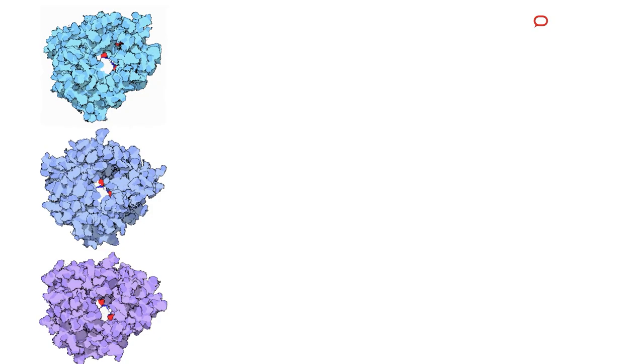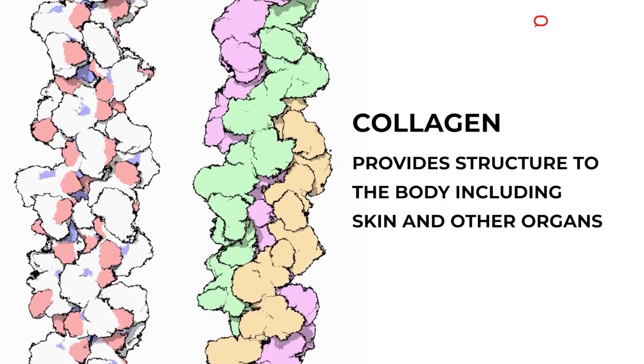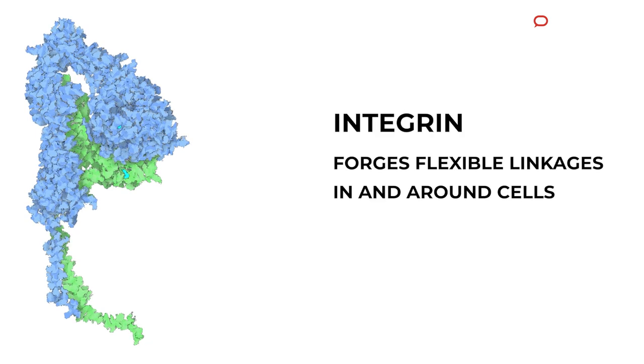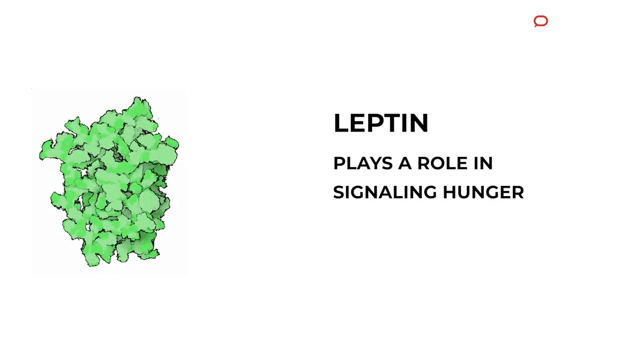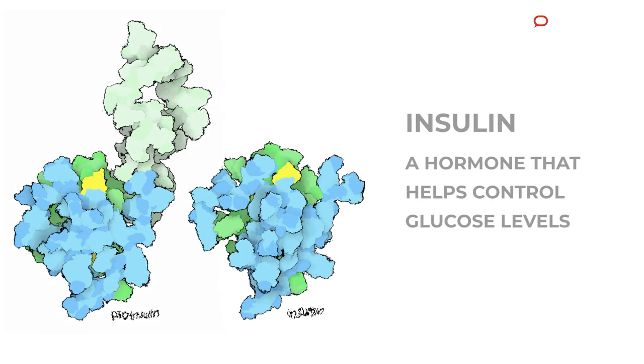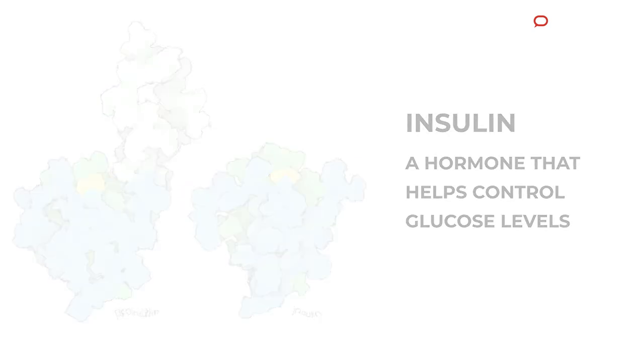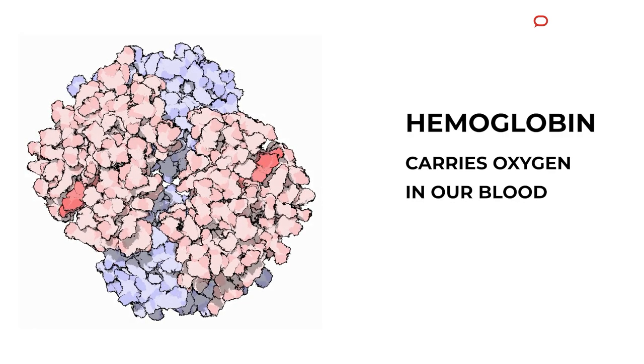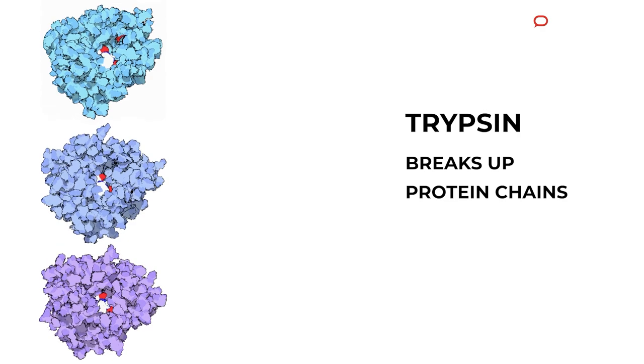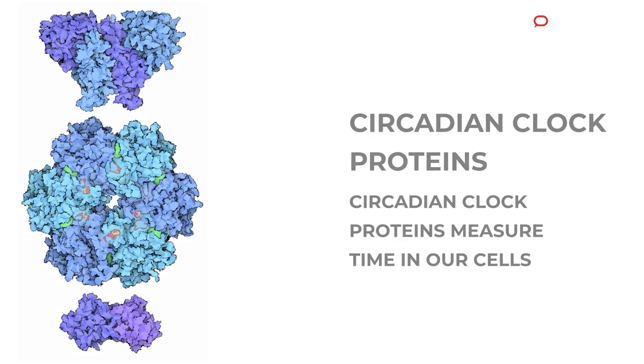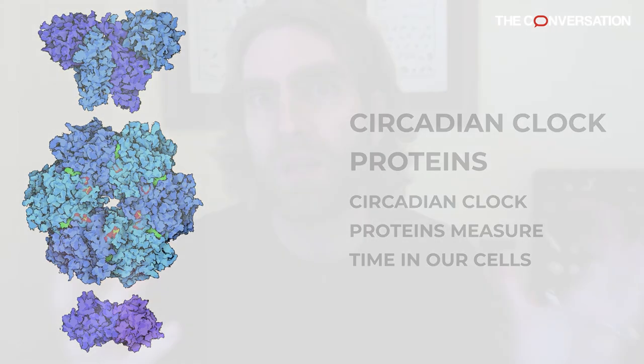There are a few main categories proteins fall into. One is structural — your body is made up of particular structures that can be string-like, globular, or things that anchor from one cell to another. Another big role is biochemistry: how your body carries out particular reactions in your cell, from breaking down fat, amino acids, or other proteins, to carrying oxygen — hemoglobin is an example of a protein. Those are the two main categories of functions that proteins carry out in the cell.